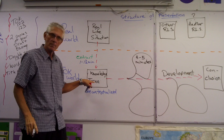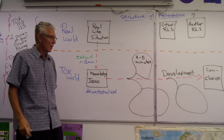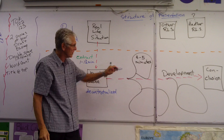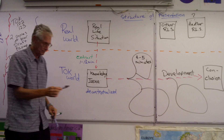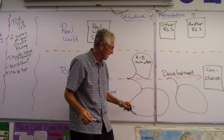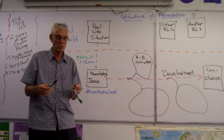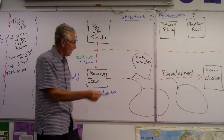Each one of these developments is an idea, a claim — an exploration of some aspect of your knowledge issue. For example, on evidence in the human sciences: in one development I might look at how human scientists gather evidence; in another, what the limitations of that evidence are; and in a third, what the best sort of evidence in the human sciences is.